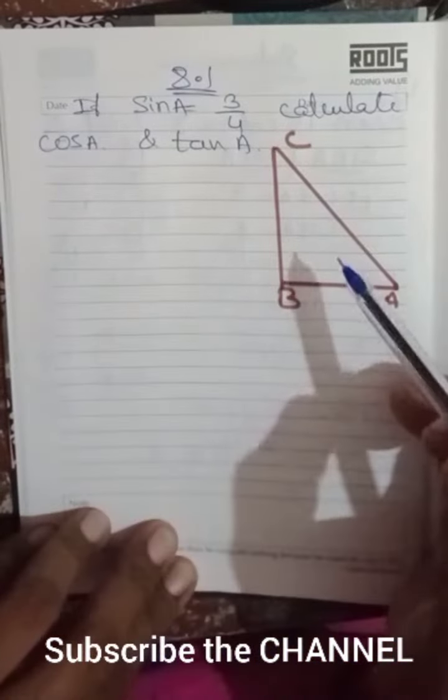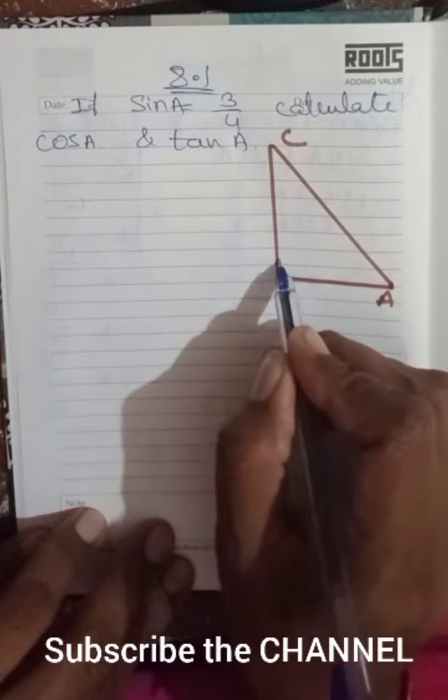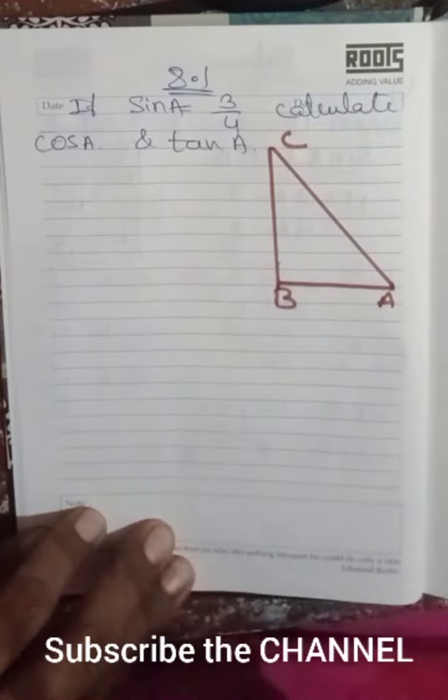Look at this problem: if sine A equals 3/4, calculate cos A and tan A. Very simple. We're going to solve this by drawing a triangle.